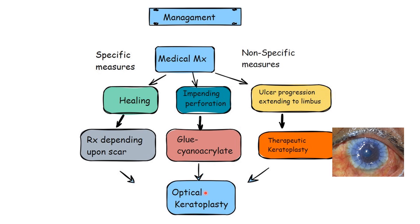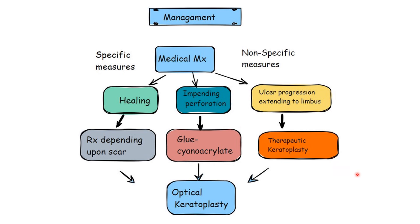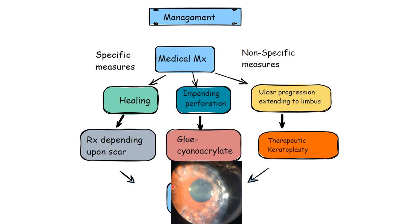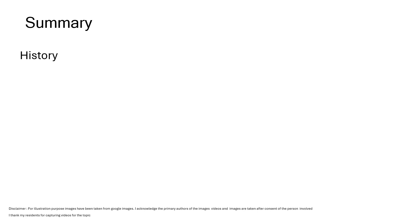If the ulcer has progressed to the limbus, a patch graft is insufficient — a total keratoplasty is required to reduce the infection load. After saving the globe, optical keratoplasty is planned at a later stage to improve vision. In summary: history gives a good indication of bacterial versus fungal etiology; examination includes visual acuity, ulcer description, hypopyon, satellite lesions, and immune ring.